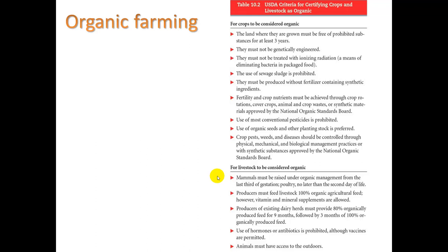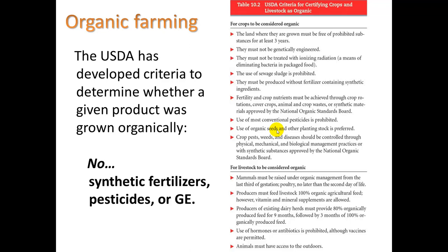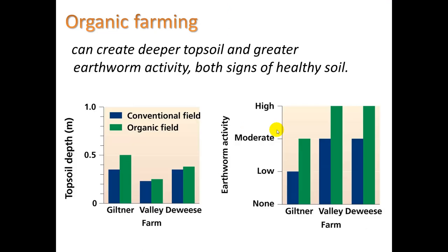Let's transition to organic farming. So far we've seen food from feedlot agriculture and aquaculture. There's also organic farming. The USDA has developed criteria to determine whether a given product was grown organically. Bottom line: it means no synthetic fertilizers, pesticides, or genetically engineered organisms. If you want to avoid eating GMOs, you should eat organic. Studies have shown that organic farming creates deeper topsoil and greater earthworm activity, both signs of healthy soil. Comparing a conventional field with an organic field side by side, topsoil depth and earthworm activity were both significantly greater for the organic field.